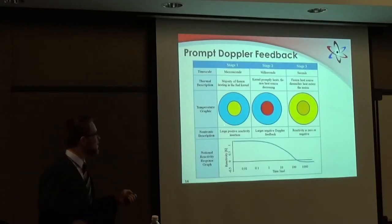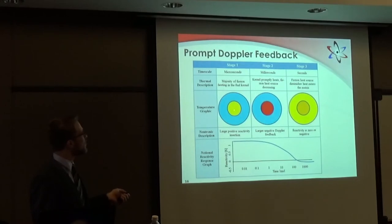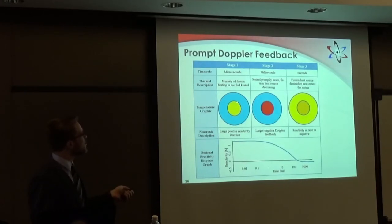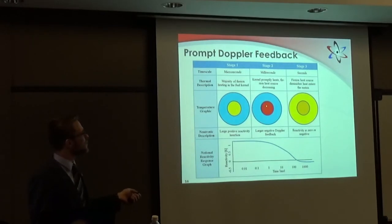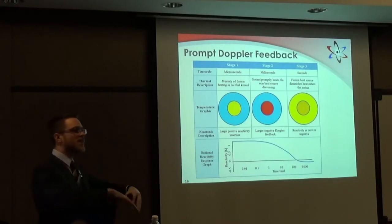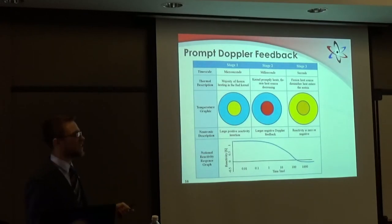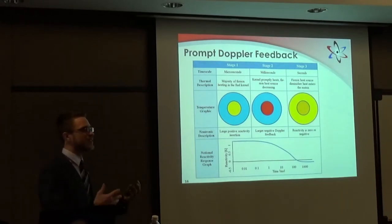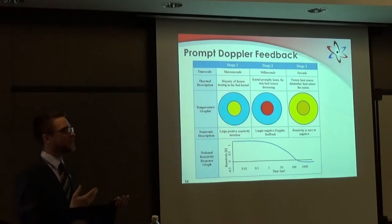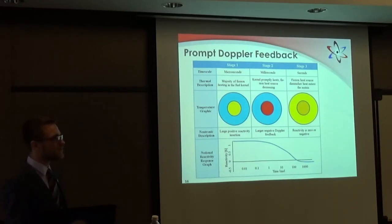How does this prompt temperature feedback work? Imagine you have a fuel kernel operating at normal power — the center is a little bit warmer than the matrix. Then suddenly you insert a large reactivity, creating a lot of heating — all of that heating is going to be in this center fuel kernel where the uranium is. Because it heats the center fuel kernel, that causes Doppler broadening and decreases the reactivity of the system. You get a very large negative Doppler feedback on the order of milliseconds — very prompt feedback.